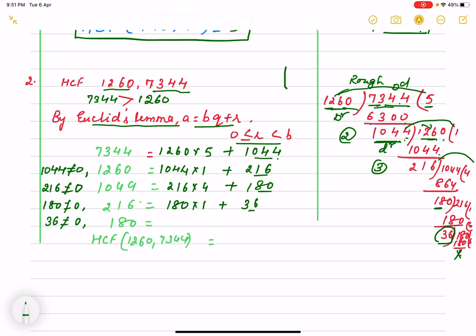So, 180 is 36 into 5. Now, we are getting remainder 0. And what is our last divisor? That is 36. So, 36 will be the HCF of this quotient. So, this way you find out HCF by Euclid's Lemma.